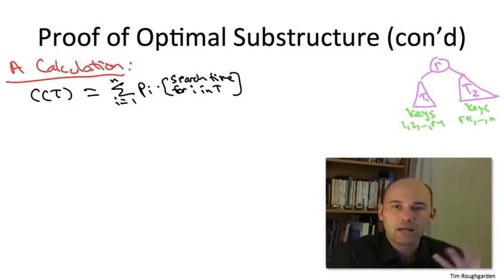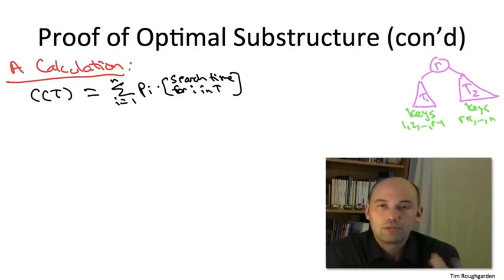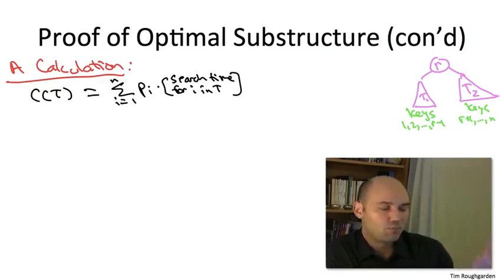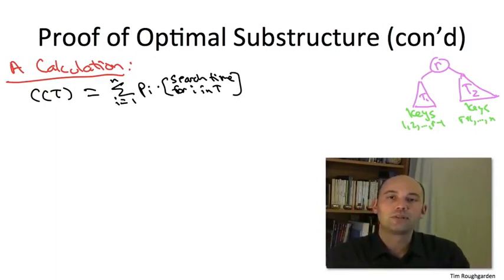So to write weighted search time in T in terms of the weighted search time in T1 and T2, it's going to be convenient to bucket the items into three categories. Those that are in the left subtree T1, i.e. 1 through r minus 1. Those in the right subtree T2, r plus 1 through n. And then of course, left over is the root r itself.